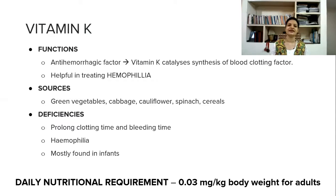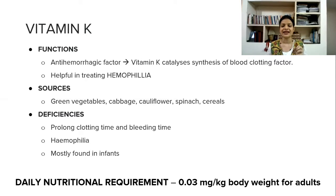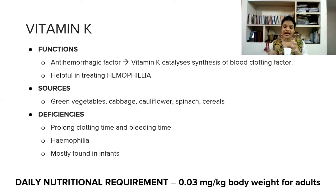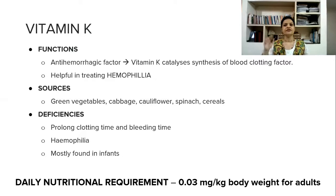The last vitamin in this video is vitamin K. It is an anti-hemorrhagic factor, also called a coagulating factor. Coagulation is a process in which blood in liquid form gets converted into a gel form to become a clot. Vitamin K acts as a catalyst — it catalyzes the conversion of prothrombin into thrombin. Then thrombin activates fibrinogen to convert into fibrin, which ultimately becomes the blood clot. Remember this sequence: vitamin K → prothrombin → thrombin → fibrinogen → fibrin → clot.